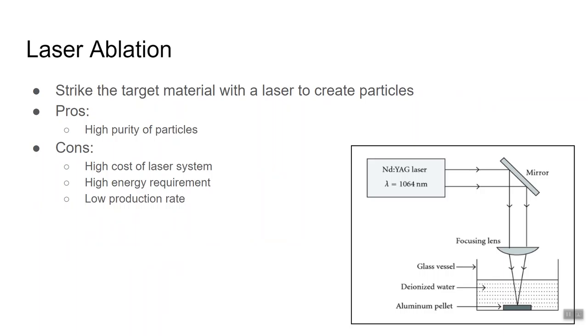Laser ablation. So this involves striking the target material with a laser beam to create nanoparticles. The laser energy is absorbed by the target material, and it separates the atoms. It is usually done in a beaker full of water in order to collect the particles. The advantages include the high purity of the particles formed, and the disadvantages are the high cost of the laser system, and the high energy required to operate the laser system, as well as the low production rate.